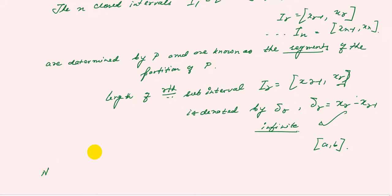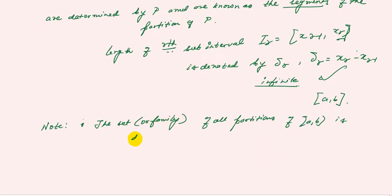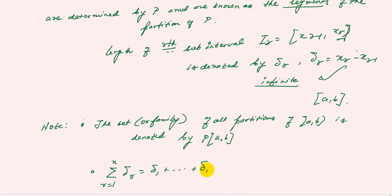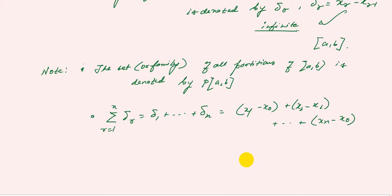Note that the family of all partitions of [A, B] is denoted by P(A, B). Also note that the summation of δᵣ for r = 1 to n equals δ₁ + ... + δₙ = (x₁ − x₀) + (x₂ − x₁) + ... + (xₙ − xₙ₋₁), which gives xₙ − x₀ = B − A.